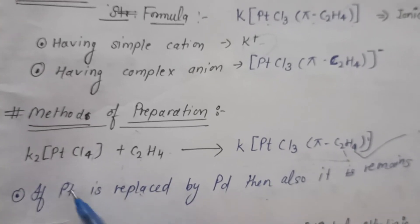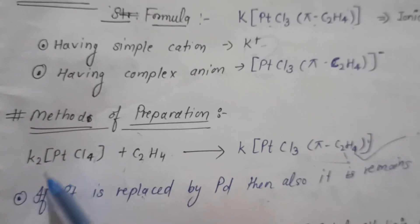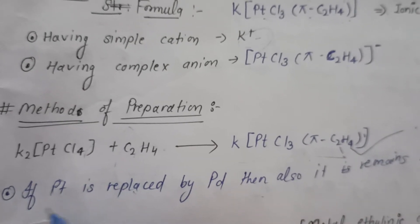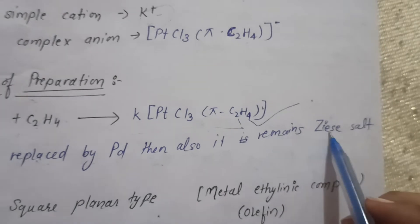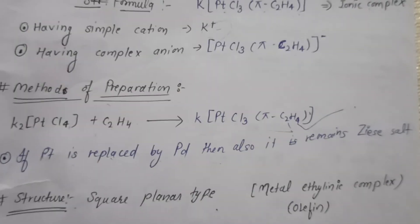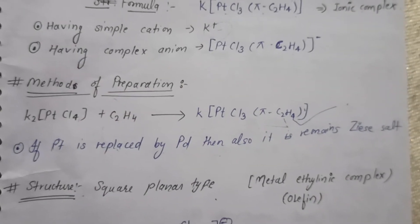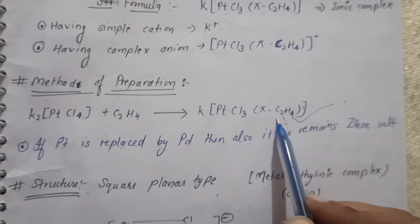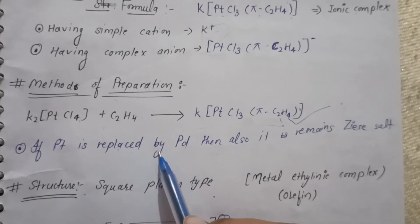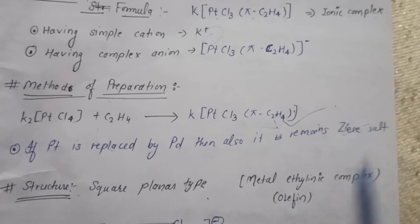Now, if we replace this platinum by palladium, then also it remains Z salt. Like, if we have K[PdCl3(π-C2H4)], then this will also be Z salt.